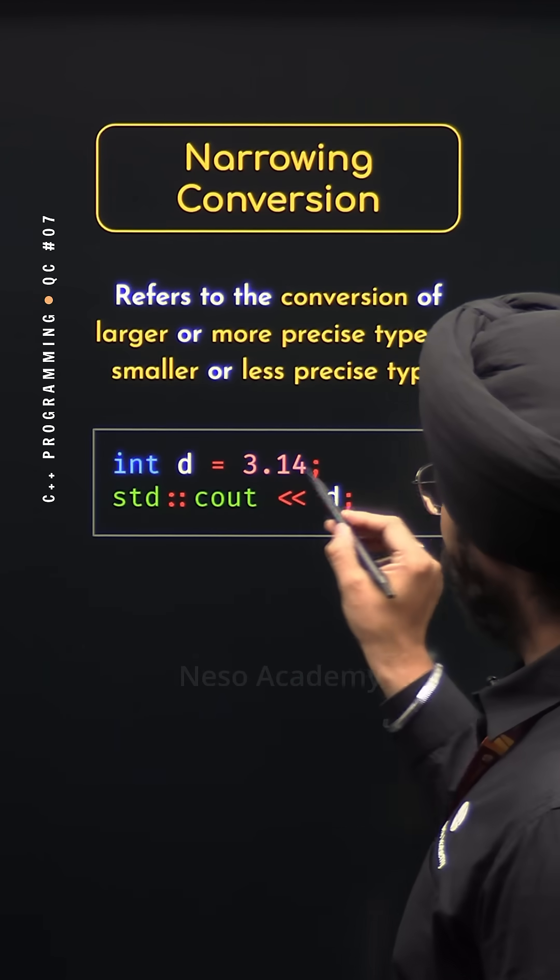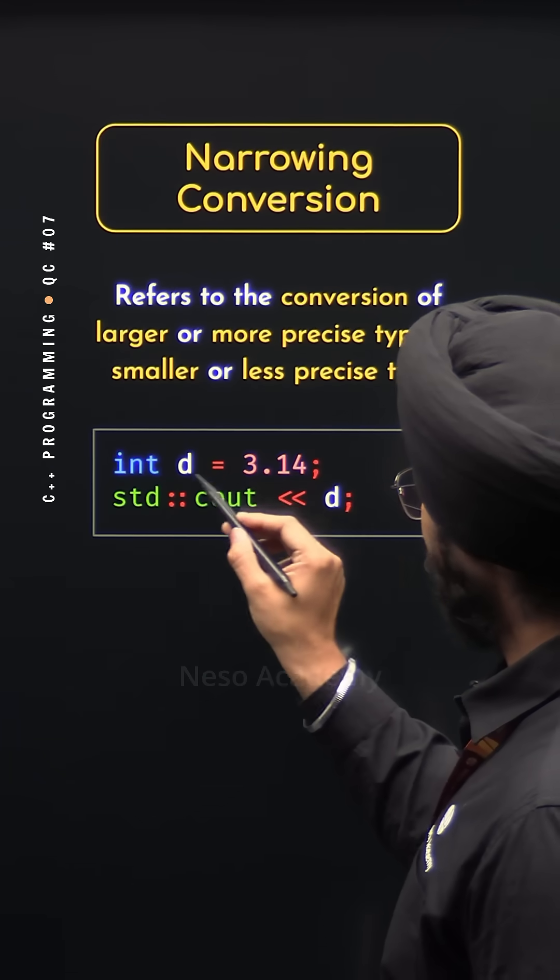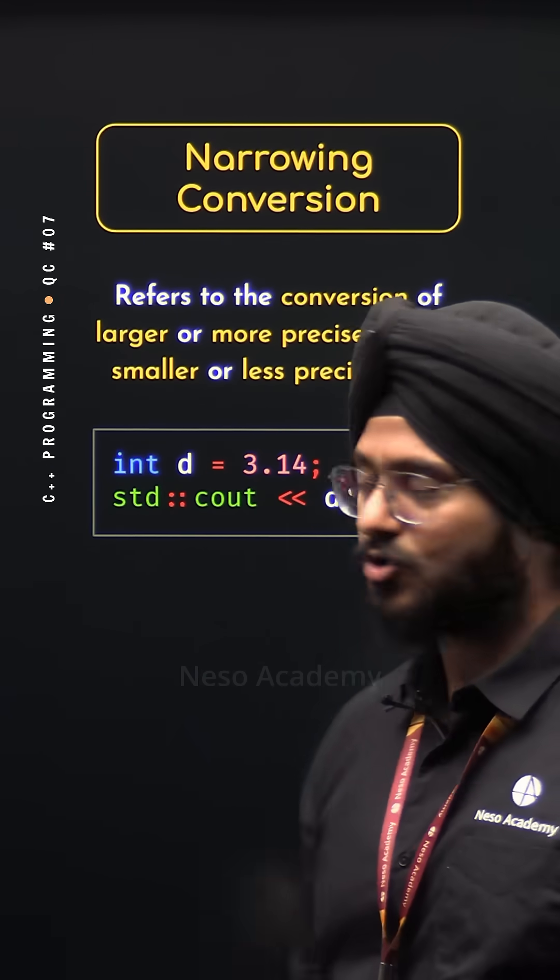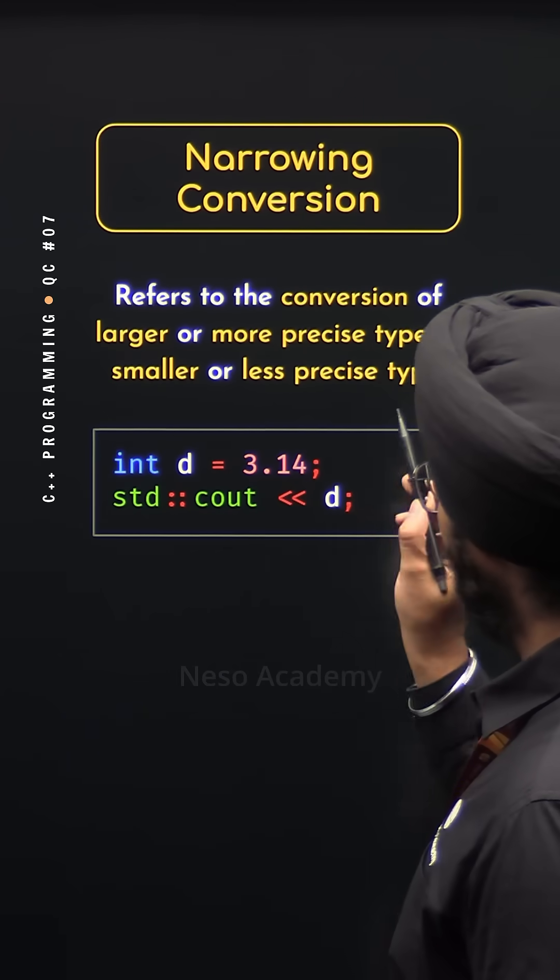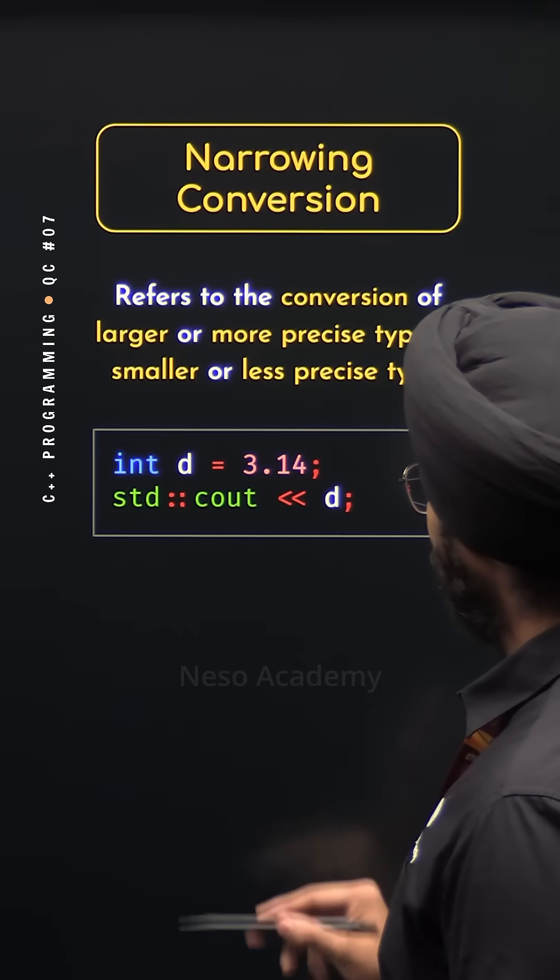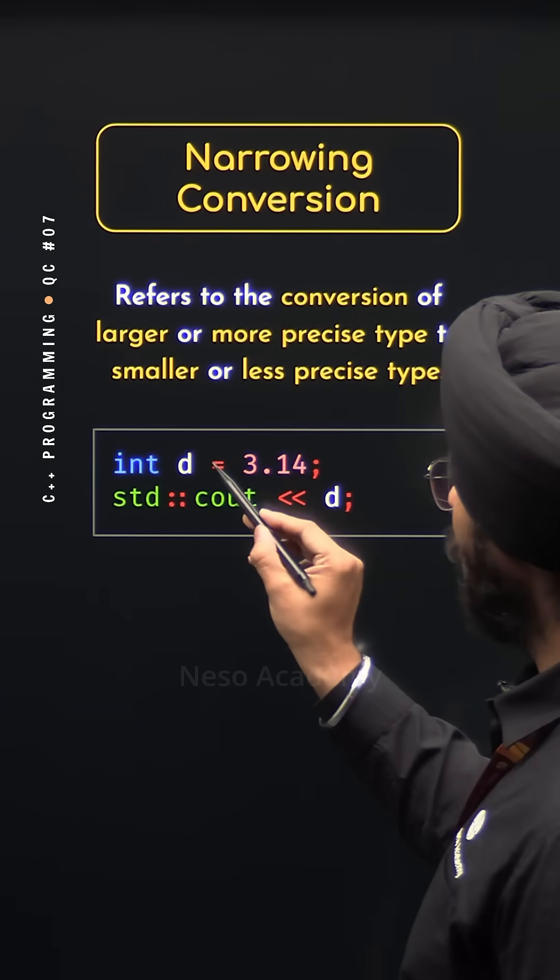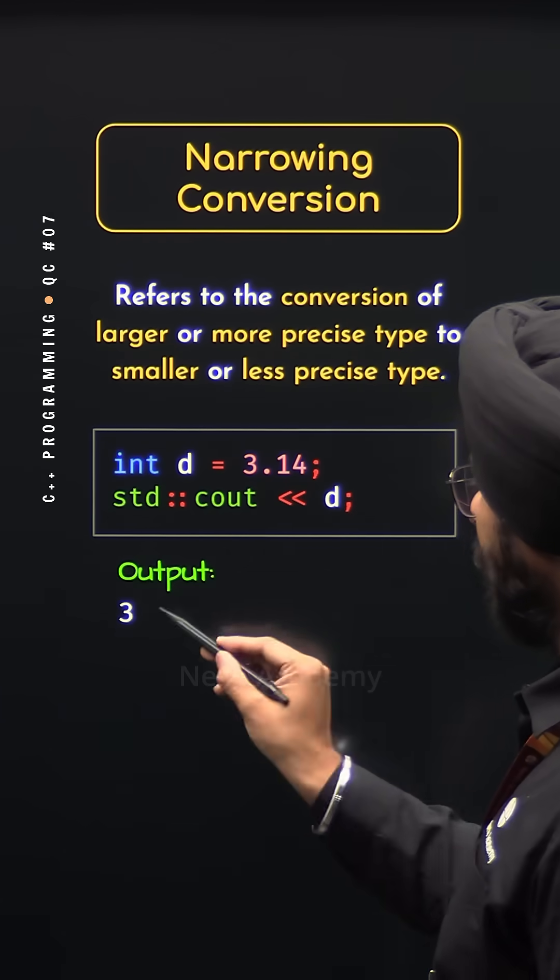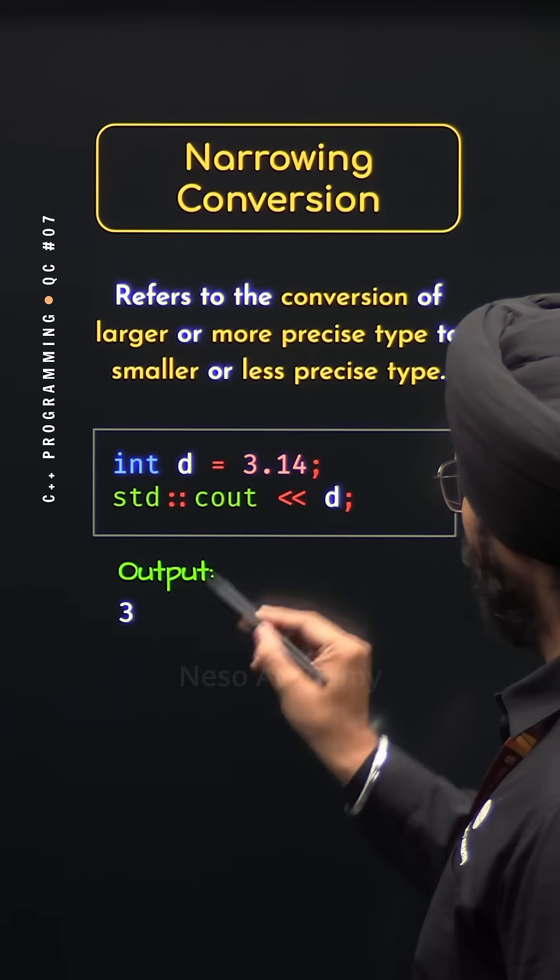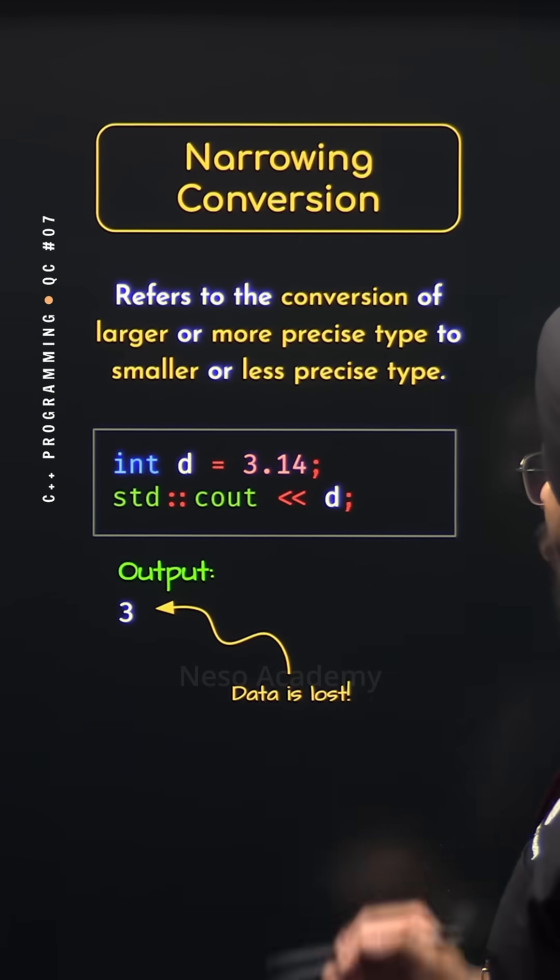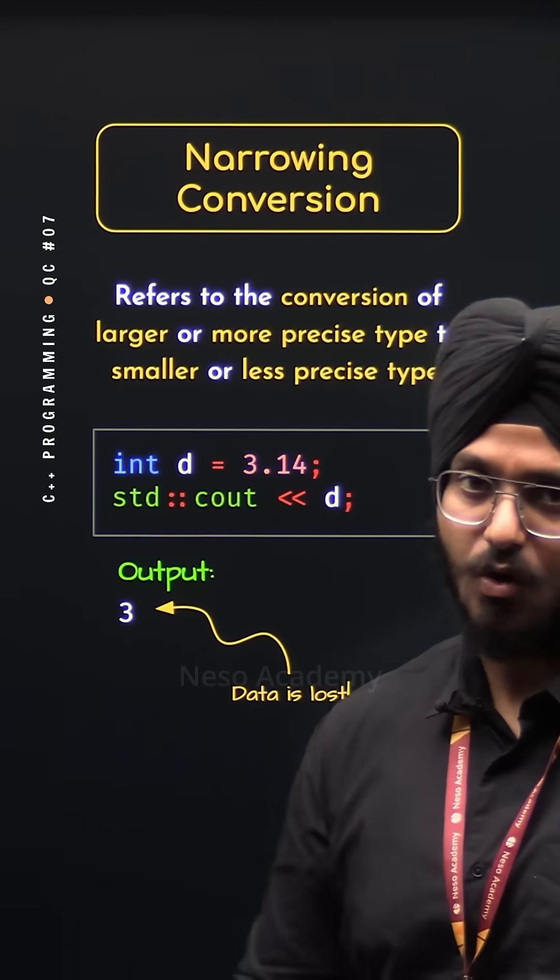Here I'm trying to store this value in this variable which is of type integer. Clearly narrowing conversion happens in this case to store this value. So here this value will be converted to integer. We will get value 3 in this variable d. Now if we try to print the value of this variable d, we will get 3 as the result. 3.14 is truncated or deleted. This means data is lost. So narrowing conversion leads to data loss.